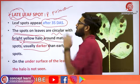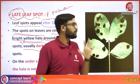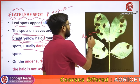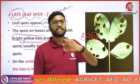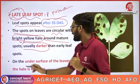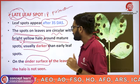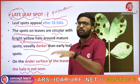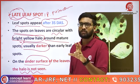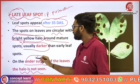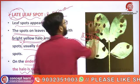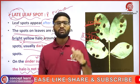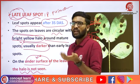To differentiate early leafspot from late leafspot: late leafspot spots are darker than early leafspot spots. Also, in early leafspot, the yellow halo is visible on both upper and lower surfaces of the leaf. But in late leafspot, there is no halo on the undersurface of the leaf.